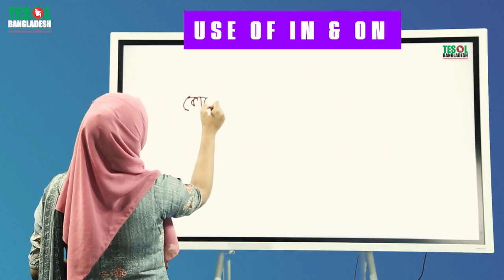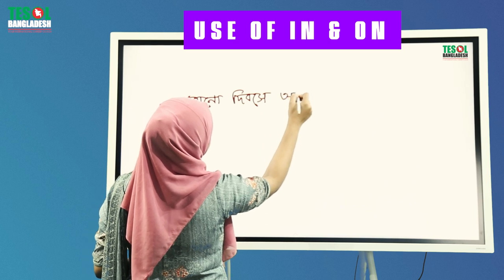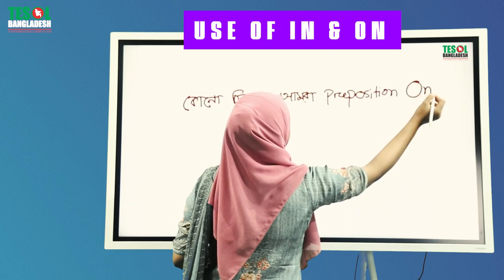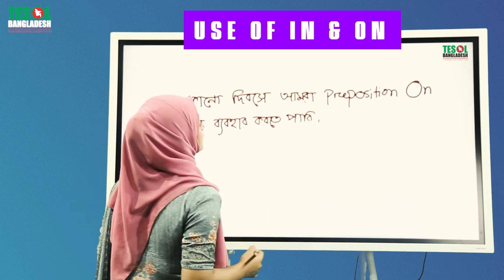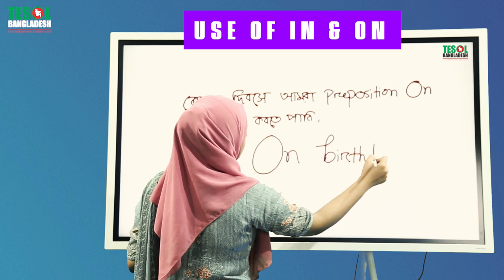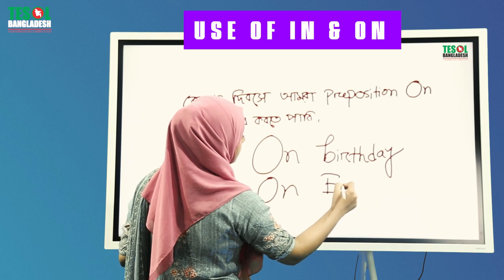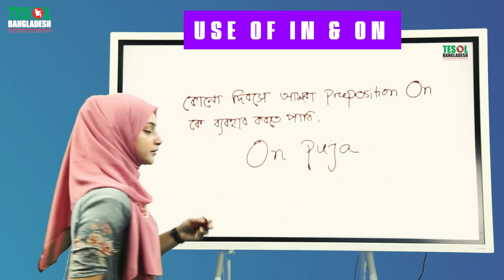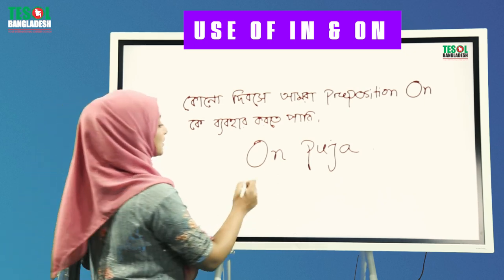Kono dhiboshe — for any special occasion — khetre amra preposition 'on' ke vayabhar kurubo. For instance: on birthday, on Eid, on Puja. So for any special occasion or festival, we use the preposition 'on'.